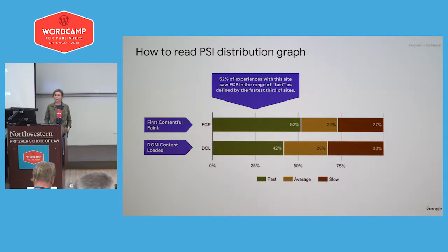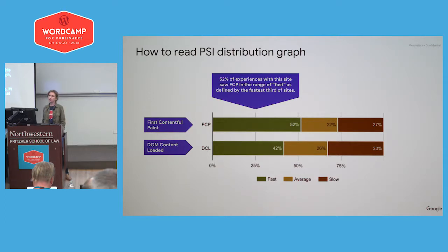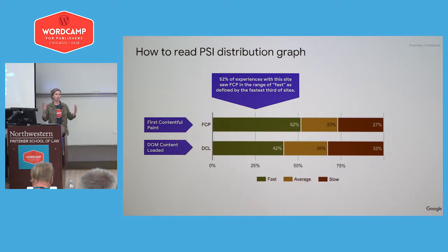To explain how you read this PageSpeed Insights graph: it's essentially an average benchmark. For example, looking at the First Contentful Paint bar, it means that 52% of experiences with this domain saw First Contentful Paint in the range of 'fast,' as defined by the fastest third of sites in the CrUX dataset. We take those four million sites, divide them into thirds, and benchmark any other site against the top, middle, and lower thirds.